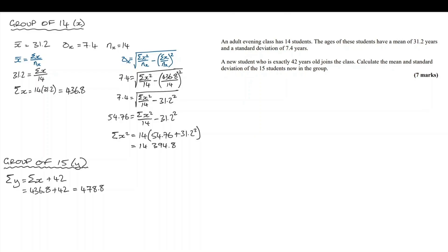Okay, well now I have enough information to find y bar, the mean of the 15 students. It's going to be the sum of y divided by n, but this time the n for the 15 students, so 15. So 478.8 divided by 15, and the mean is going to be 31.92.